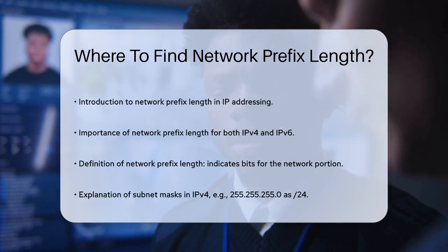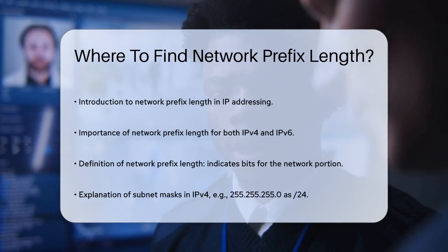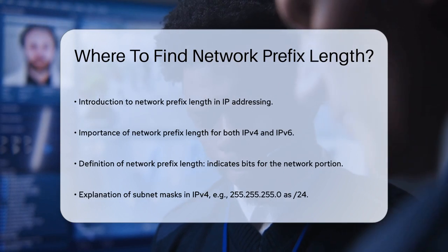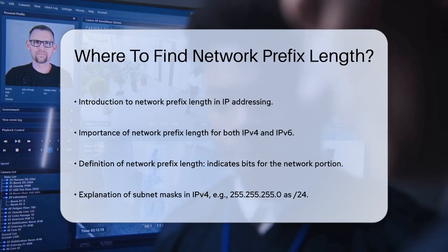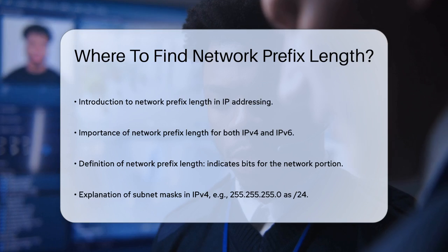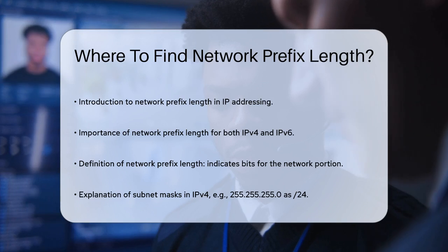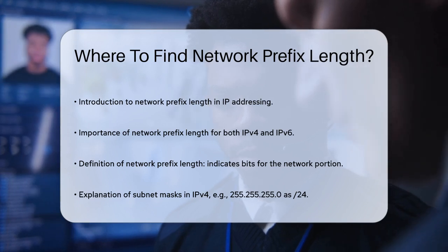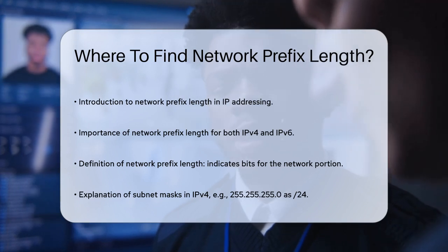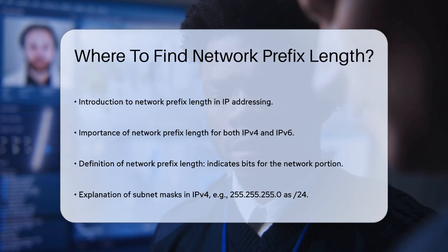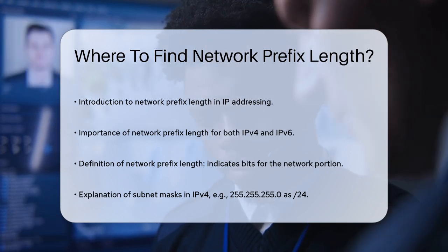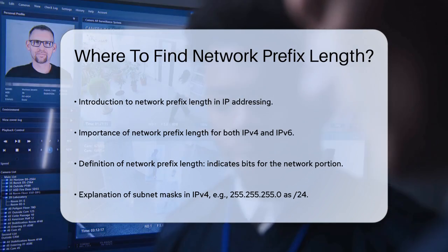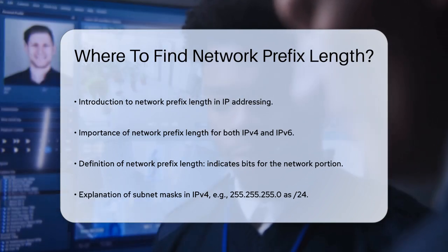When working with IP addresses, whether it's IPv4 or IPv6, the network prefix length is a crucial piece of information. It tells you how many bits of the IP address are dedicated to the network portion. For IPv4 addresses, you often see a subnet mask, which is another way to represent the prefix length.